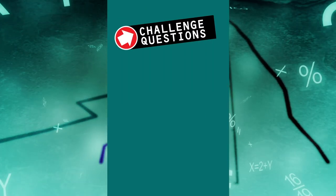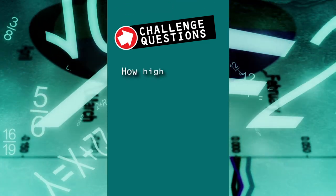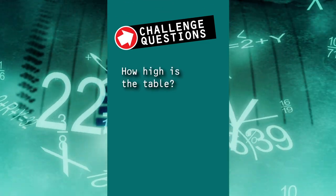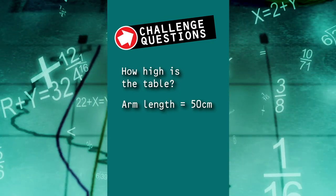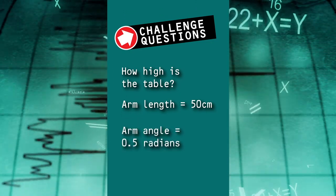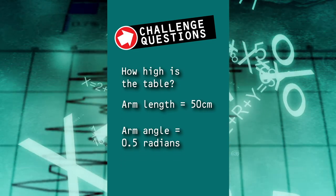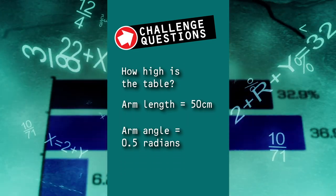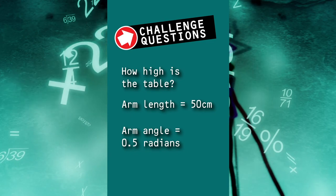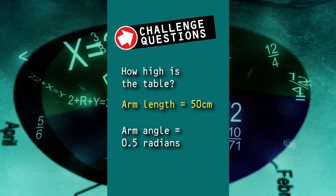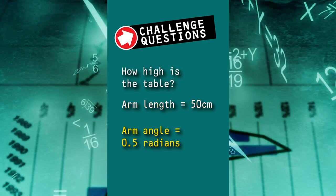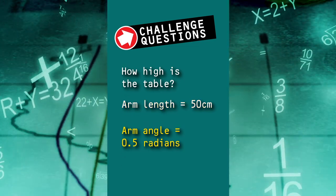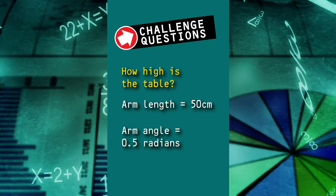Your second challenge question: you need to figure out the height of the table. We have a robot arm that is 50 centimeters long, and is at an angle of 0.5 radians. How high of a table can its end effector reach?